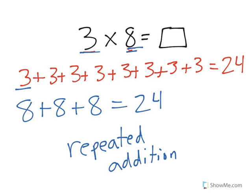In this top problem, each of these groups has a total of 3, and there are 8 groups. When we add all those together, we get our answer of 24.